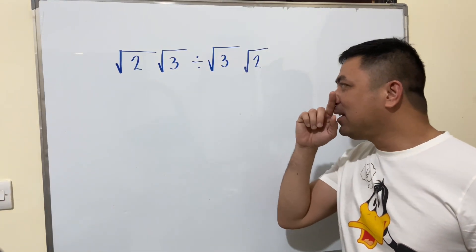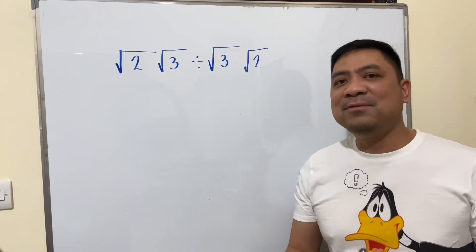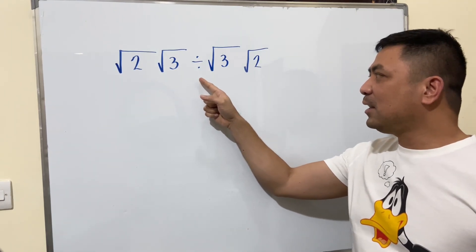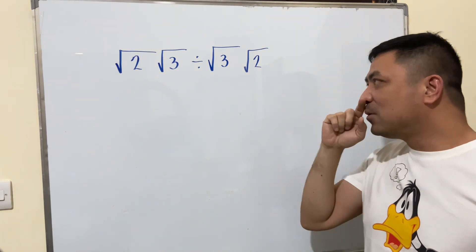We have another simple looking problem, yet I guess many would fail to answer this one. We have square root of two, square root of three, divided by square root of three, square root of two.